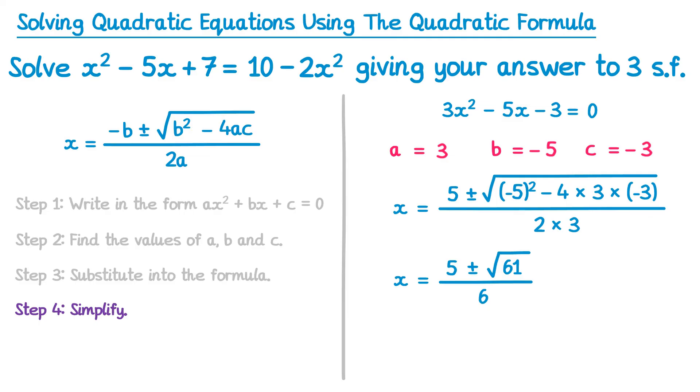We can now separate this into our two solutions. So we have, first of all, x equals 5 plus square root 61 over 6. And then we have x equals 5 minus square root 61 over 6. The difference here is the first one has a plus, and the second one has a minus. If you type both of these into your calculator to get them as decimals, remember the question asked us for three significant figures this time. So the first one would be x equals 2.14, and the second one would be x equals negative 0.468.